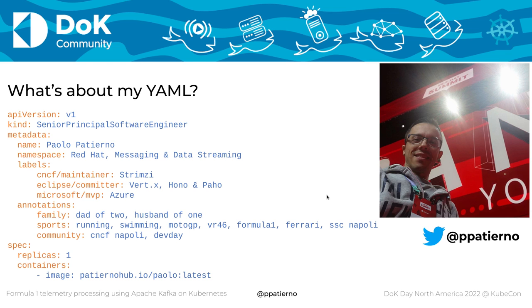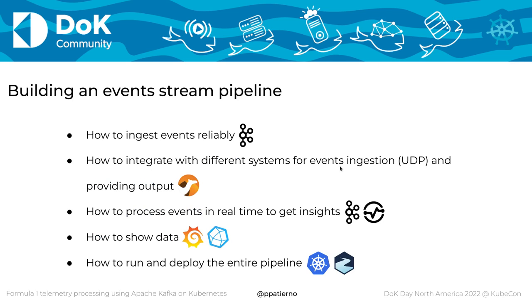Let me introduce myself. I am Paolo Paterno, a software engineer at Red Hat on the messaging and data streaming team. I mostly work on Apache Kafka and the Strimzi project, which is a CNCF project about running Kafka on Kubernetes. I'm one of the maintainers of Strimzi, also a contributor at the Eclipse Foundation on IoT-related projects, and a Microsoft MVP on Azure technologies.